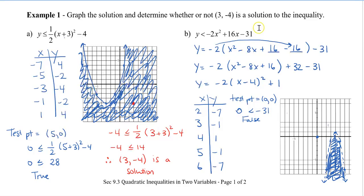Let's check to see if (3, -4) is a solution. It looks like the point would be inside the shaded region. Plugging in: -4 < -2(3²) + 16(3) − 31. So 3 squared is 9, times -2 gives -18, plus 48, minus 31 gives -1. So -4 < -1, and since -1 is greater than -4, this is true, and it is a solution. According to my graph, it is a solution as well since that region is shaded.